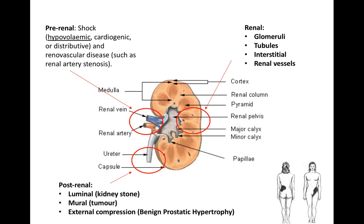Renal causes can affect different parts of the kidney: the glomeruli, tubules, interstitium, and renal vessels — the domain of the nephrologist. We do nephrology screens to look for the cause of a glomerulonephritis, and we would investigate someone with proteinuria or hematuria and worsening kidney function. Post-renal causes relate to blockage after the kidney — kidney stones, tumors, and external compression such as benign prostatic hypertrophy. Loin-to-groin pain is a classic presentation of a kidney stone, which may lead to worsening kidney function if the ureter is obstructed.